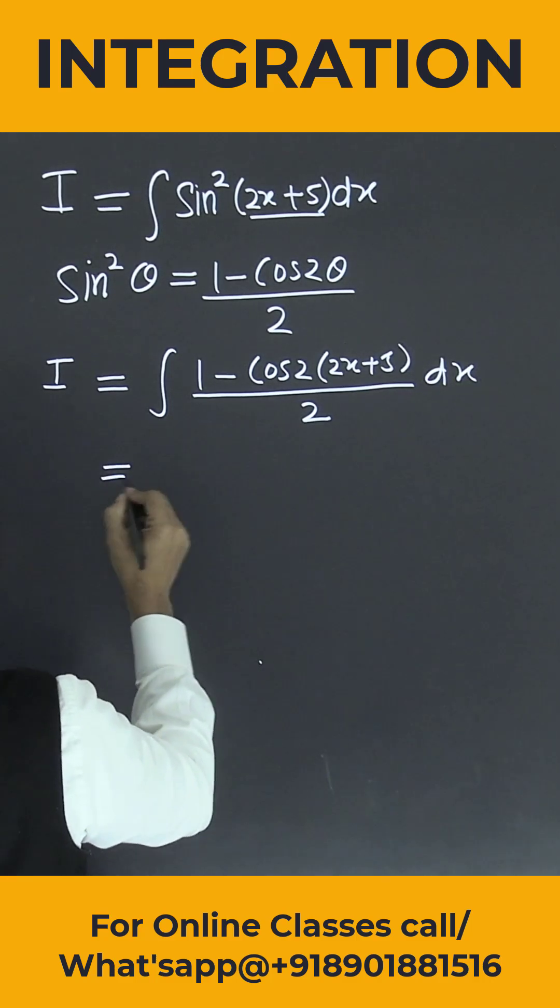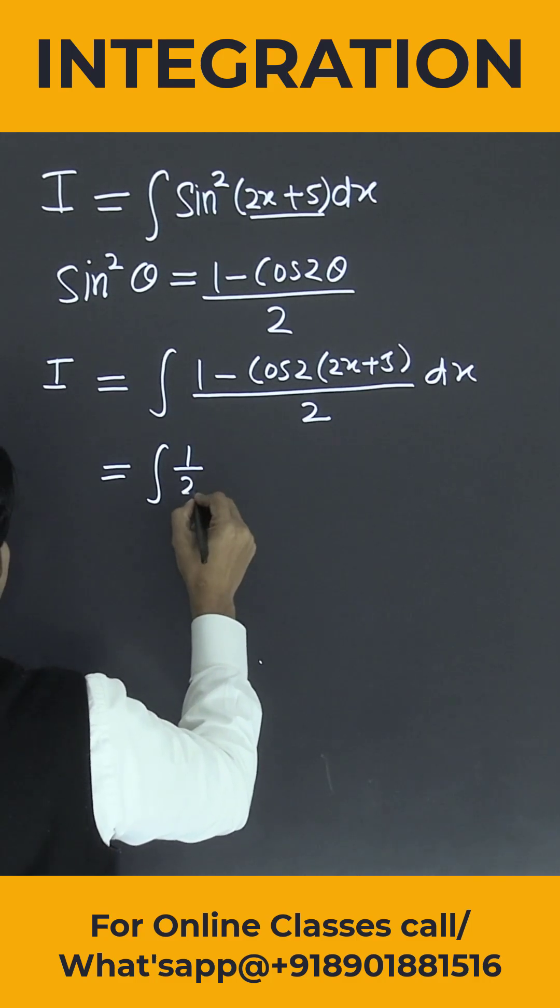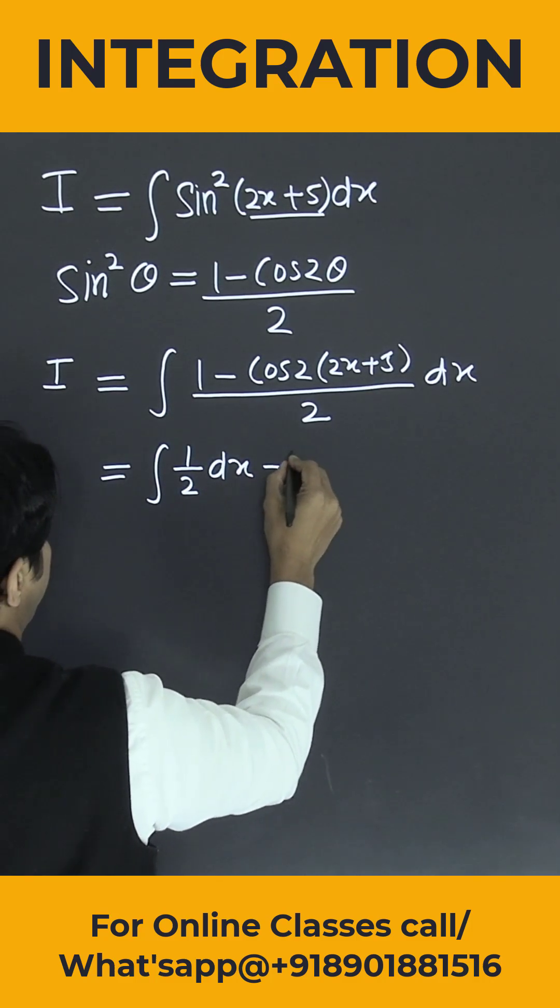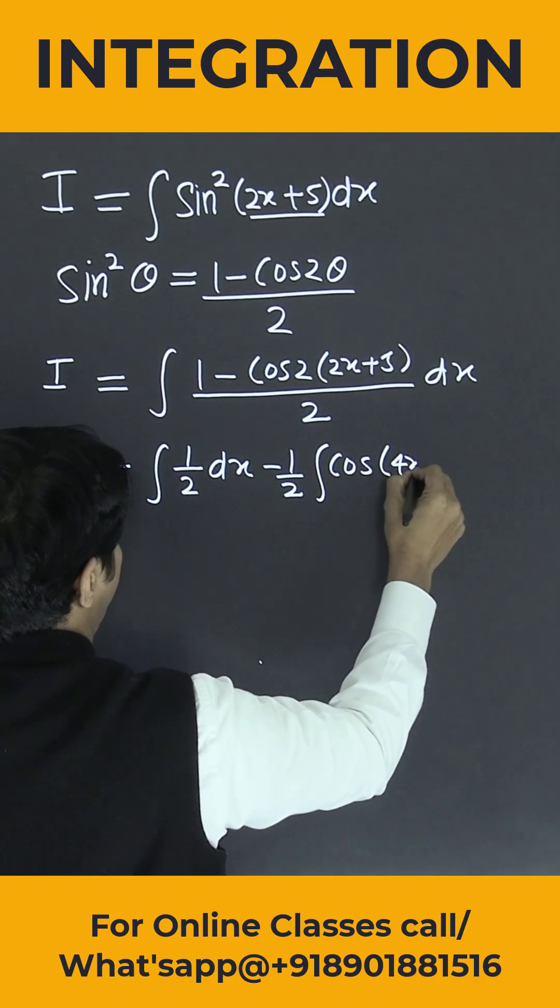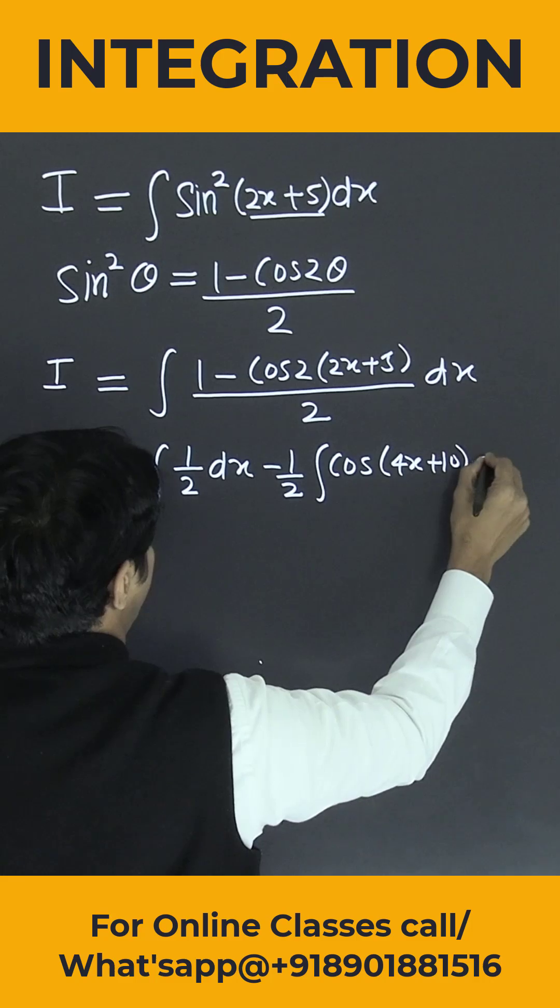So this is nothing but, can I separate? It will become integration 1 by 2 into dx minus 1 by 2 integration cos of 4x plus 10 into dx.